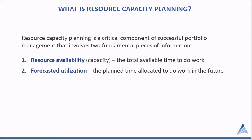The first question is, what is resource capacity planning? It's a critical component of good portfolio management that involves two fundamental pieces of information. The first is resource availability, which is our capacity — the total available time that we have to get work done. Forecasted utilization is the planned time that we have allocated or forecasted to get work done in the future. It's a forward-looking view.